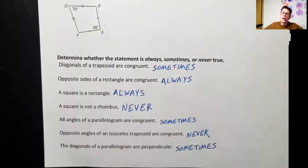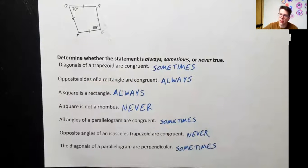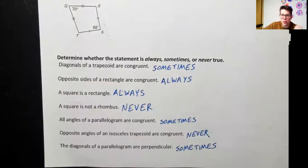Okay, there you go. That covers all of the quadrilaterals we're going to be talking about: parallelogram, rhombus, square, rectangle, trapezoid, isosceles trapezoid, and kites.